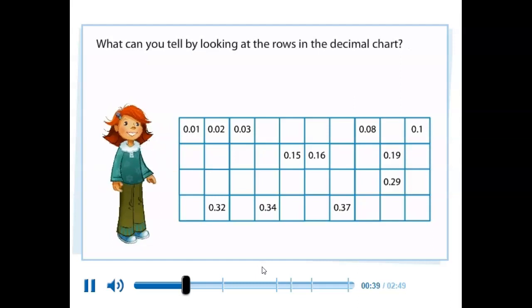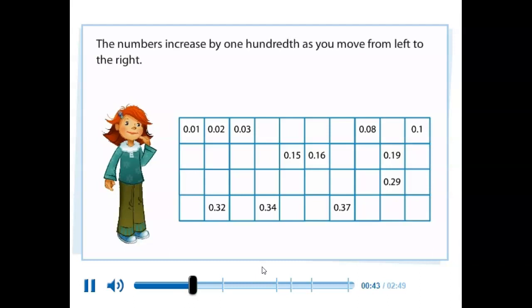What can you tell by looking at the rows in the decimal chart? The numbers increase by one hundredth as you move from left to the right.